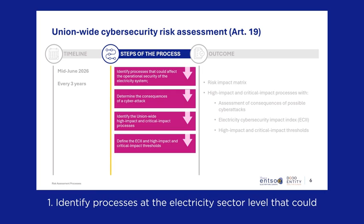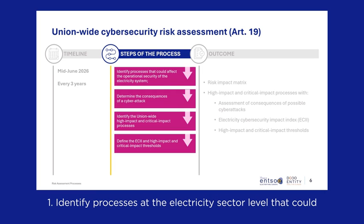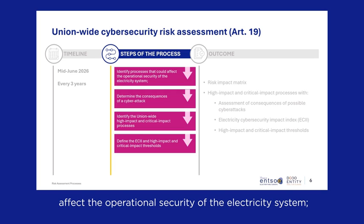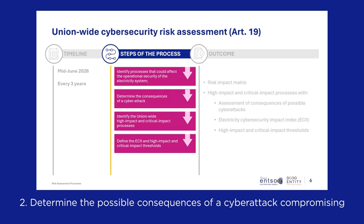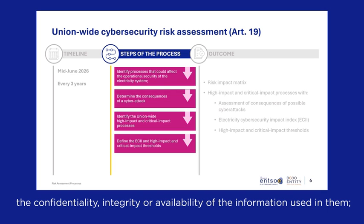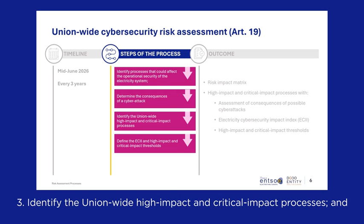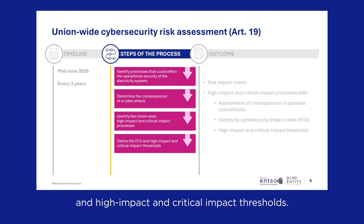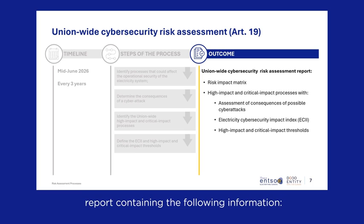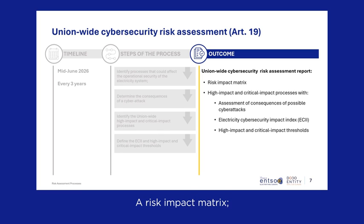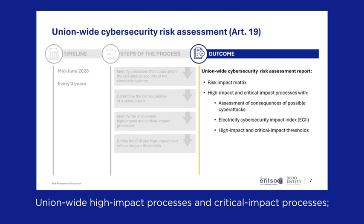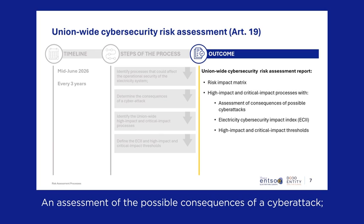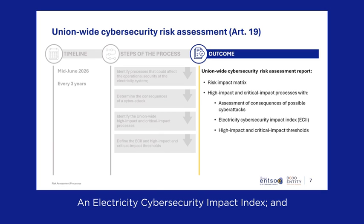The goal is to identify, analyze, and evaluate the possible consequences of cyberattacks affecting the operational security of the electricity system and disrupting cross-border electricity flows. There are four steps to this process: 1. Identify processes at the electricity sector level that could affect operational security. 2. Determine the possible consequences of a cyberattack compromising the confidentiality, integrity, or availability of the information used in them. 3. Identify the union-wide high-impact and critical impact processes. 4. Define the electricity cybersecurity impact indices and high-impact and critical impact thresholds. The outcome will be a formalized report containing a risk-impact matrix, union-wide high-impact and critical impact processes, an assessment of possible cyberattack consequences, an electricity cybersecurity impact index, and high-impact and critical impact thresholds.